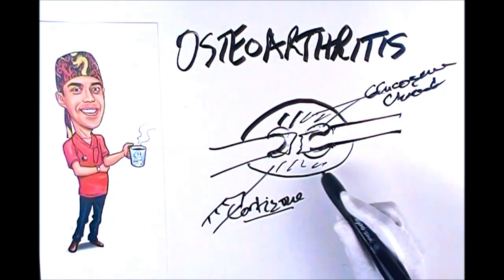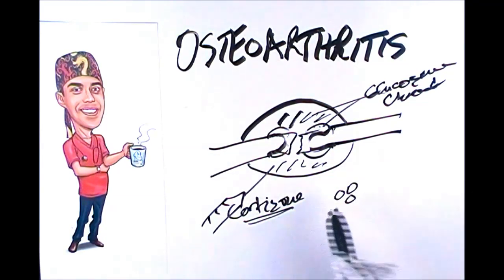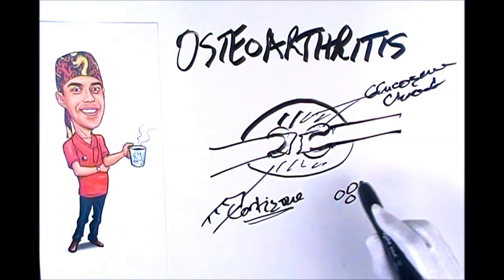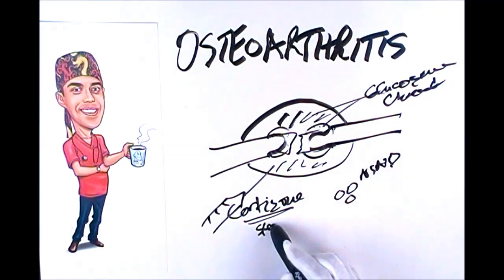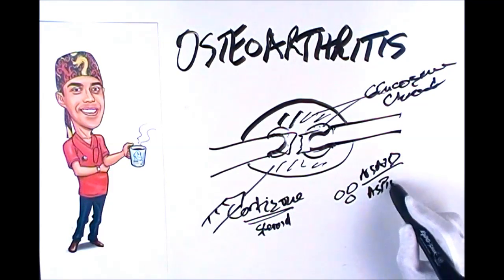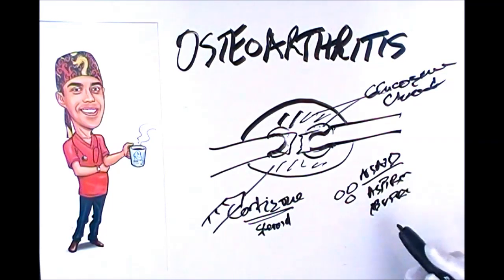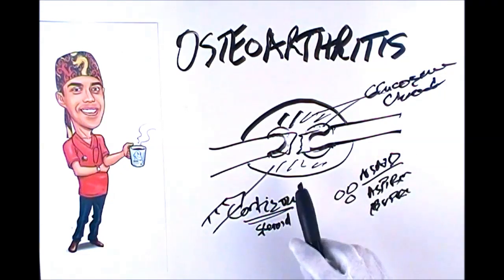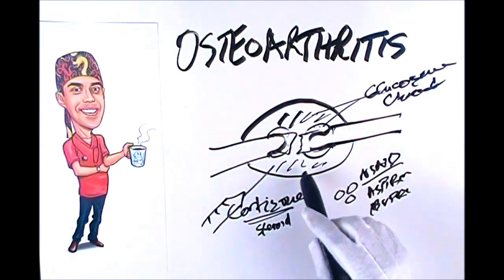Another alternative along those same lines is taking tablets of anti-inflammatories. Rather than the hormone version — which wouldn't be safe to take orally — you use what we call NSAIDs, or non-steroidal anti-inflammatories. The cortisone is a steroid hormone, not the type bodybuilders use but a different family member. The non-steroidal anti-inflammatories include things like aspirin, ibuprofen, and indomethacin, among many others. Brand names include things like Advil.